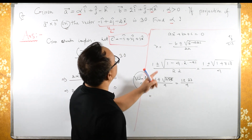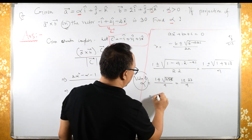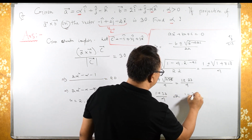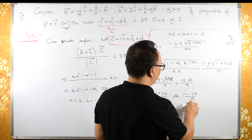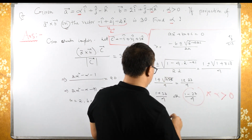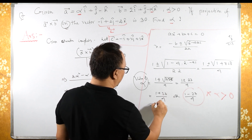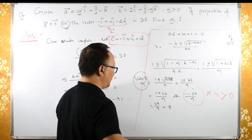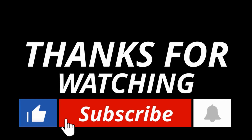We get two values: (1 + 27)/4 = 28/4 = 7, or (1 − 27)/4 = −26/4, which is negative. Since alpha is greater than 0, we reject the negative value. Therefore alpha equals 7 is the answer.